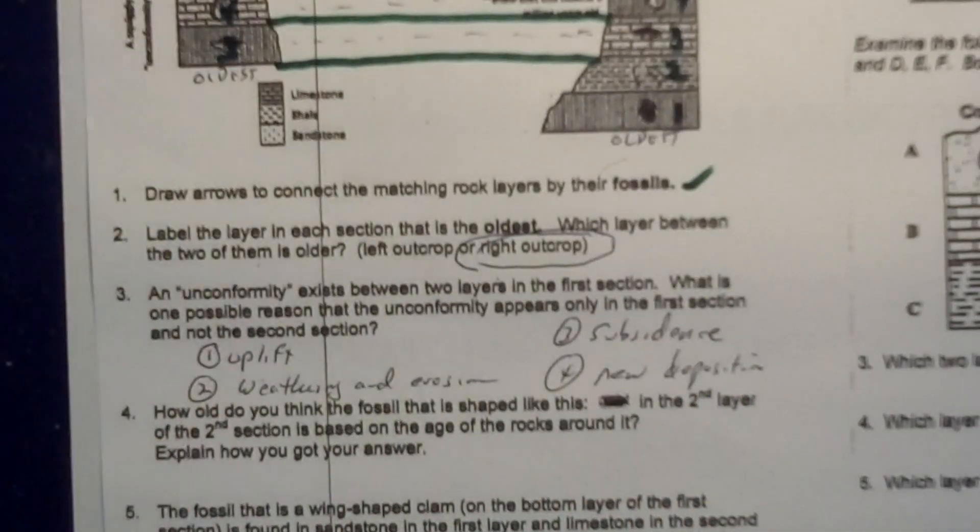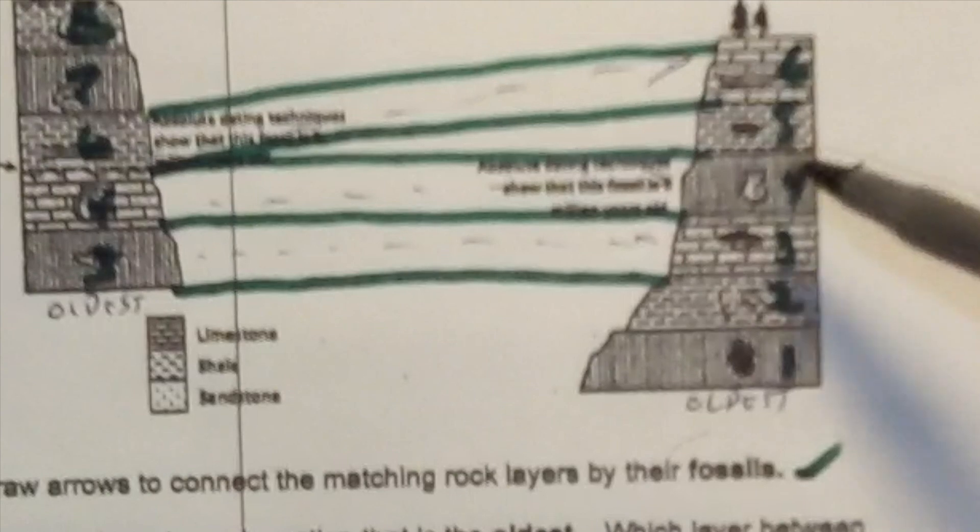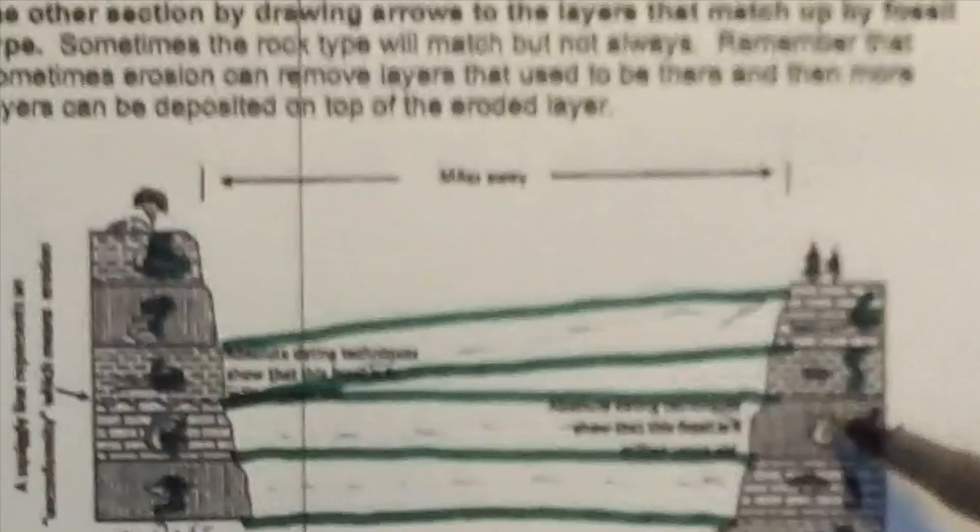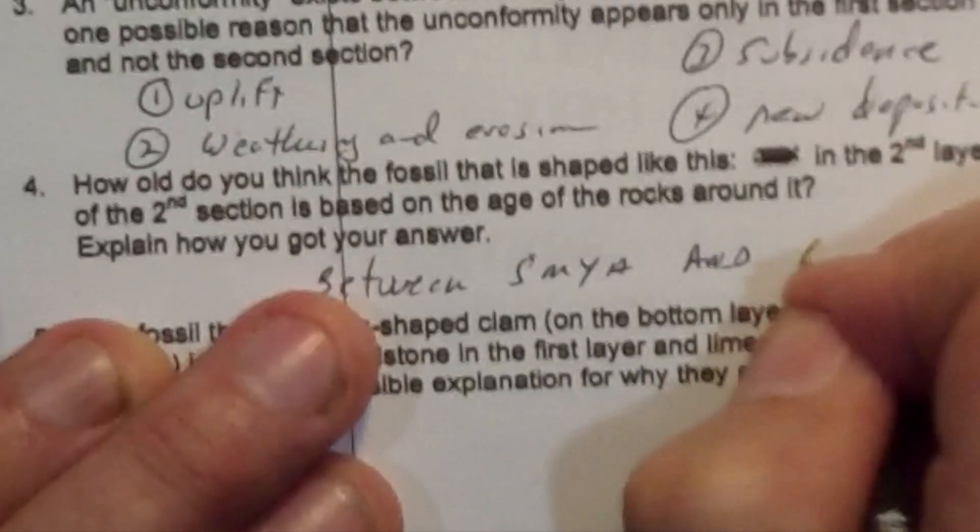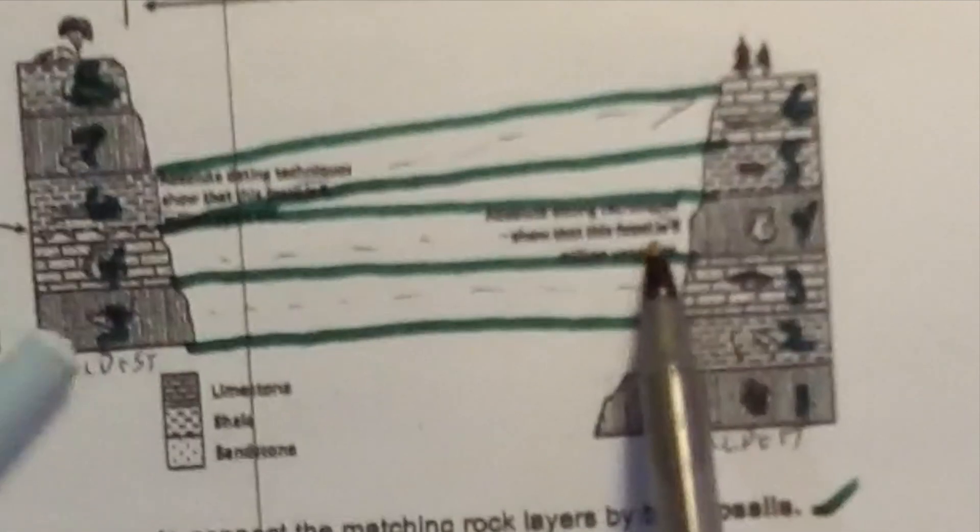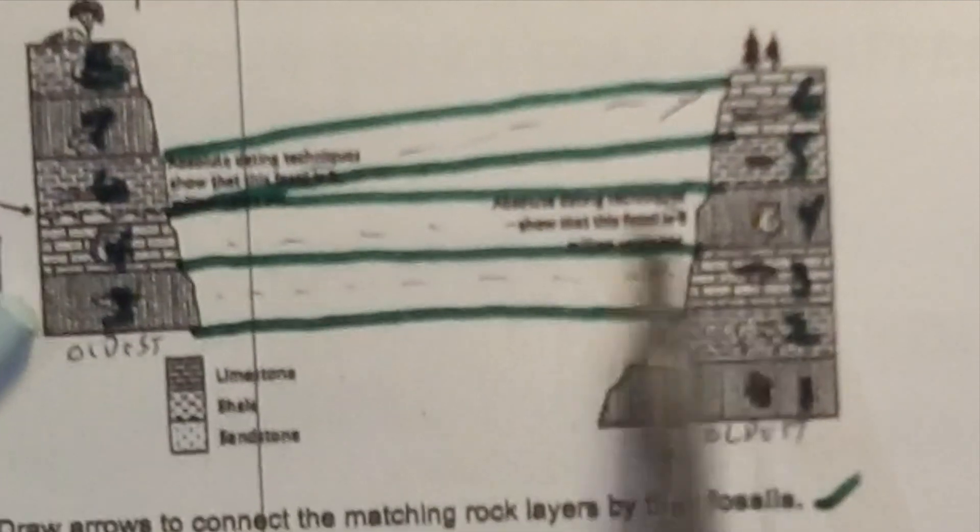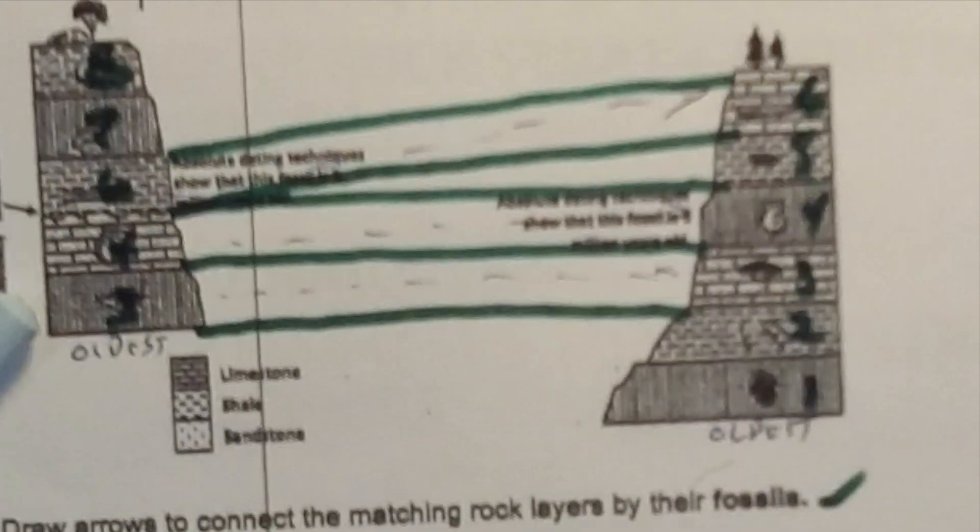How old do you think the fossil that's shaped like this in the second layer is compared to the rocks around it? I'm going to say that it's between 5 million years old and 6 million years old. How did I figure that out? This layer we know for certain is 6 million years old. This layer over here is 5 million years old. This is in between those two layers.